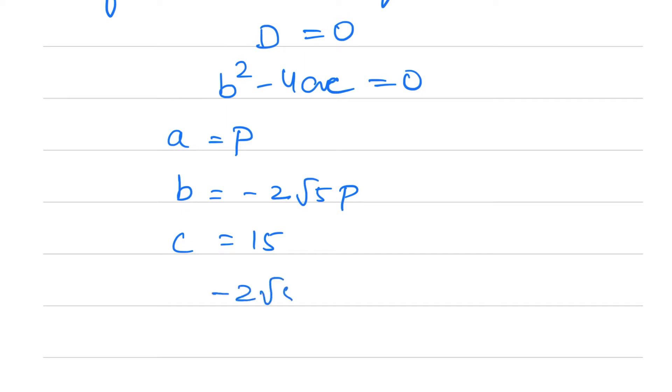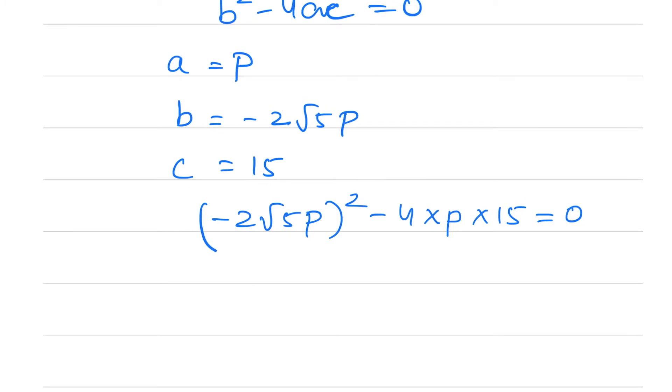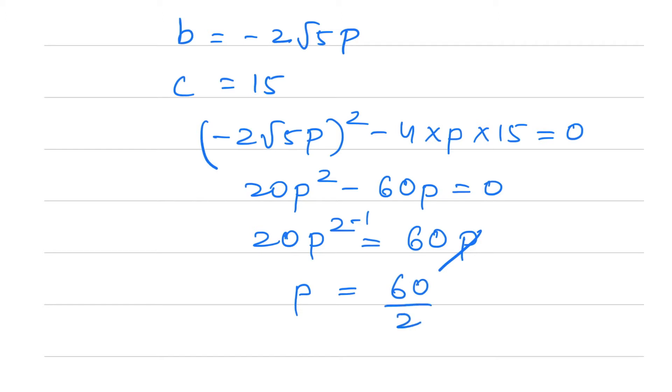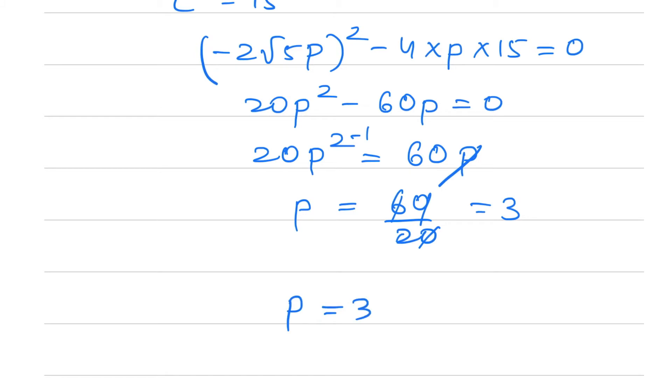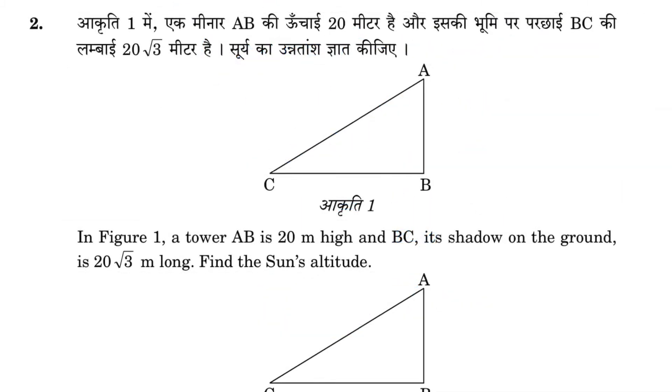So (-2√5p)² - 4 × p × 15 = 0. This gives me 20p² - 60p = 0. Therefore 20p² = 60p. The p gets cancelled, so p = 60/20. I get 3, so p = 3. That's the answer.